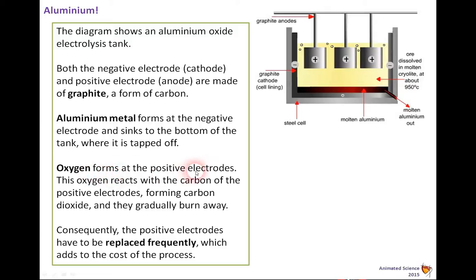So the oxygen forms at the positive electrodes, and the oxygen reacts with the carbon of the electrode to form carbon dioxide, and they gradually burn away. So these electrodes are sacrificial electrodes, and consequently they need to be replaced frequently. That adds to the cost of the process.